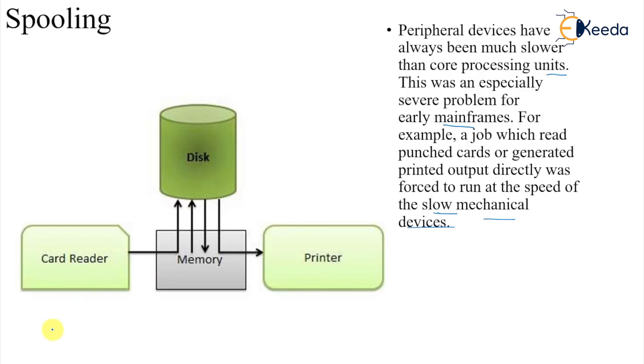To avoid this thing, we come up with a buffer that is in the disk or the memory. Data can be directly read from the card reader to disk or buffer at their own pace and CPU will be engaged with its own activity.